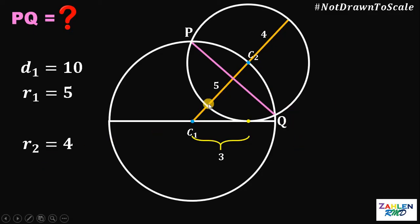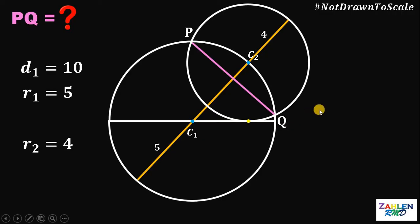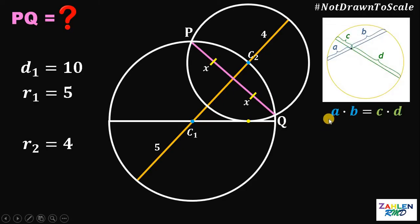Let's extend the line connecting the centers of the two circles. The length of the segment from the center of the big circle to this point is also 5, the radius of the big circle. Segment PQ is bisected by this line connecting the centers. Let the measure of each equal half be x. We will use the Chord-Chord Power Theorem, which states that if two chords of a circle intersect, the product of the parts of one chord equals the product of the parts of the other chord — so A times B equals C times D.